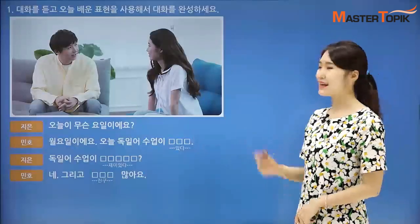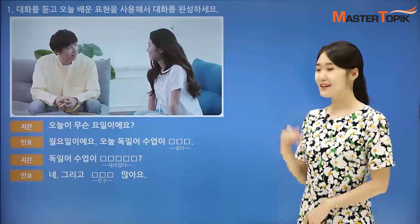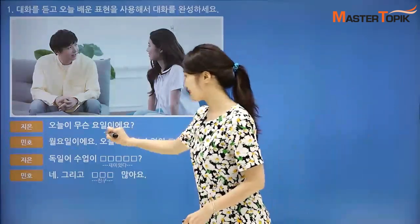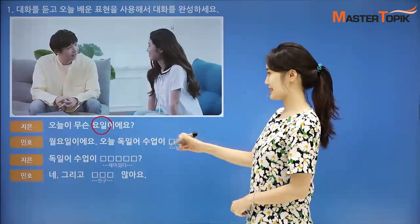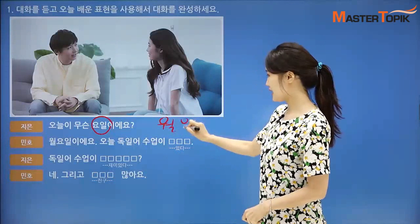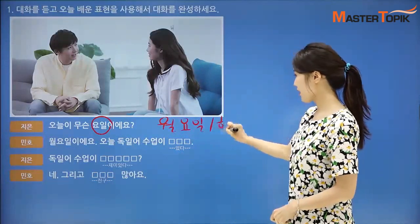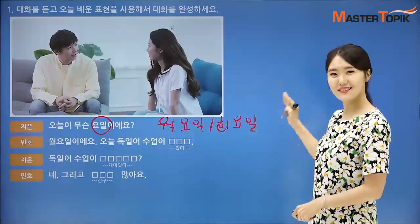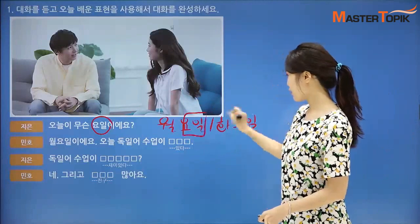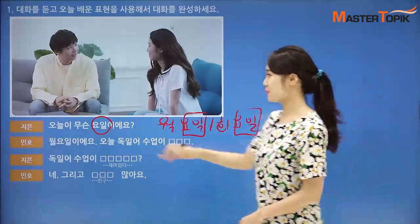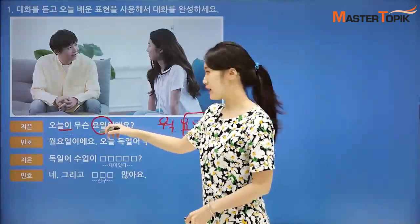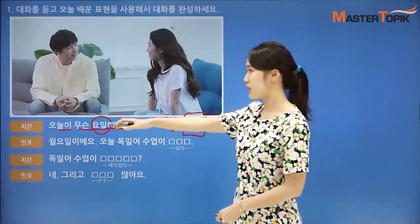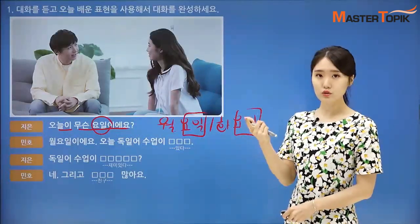So, you heard 지은 and 민호 speaking to each other, right? They spoke: 오늘이 무슨 요일이에요? You can remember 요일 — 월요일, 화요일. Do you remember? Monday, Tuesday, Wednesday, Thursday — we all have 요일. So he is asking: 오늘, today, 무슨 요일이에요? Which day is it today? Monday, Tuesday? 무슨 요일이에요?